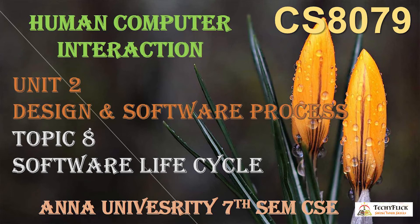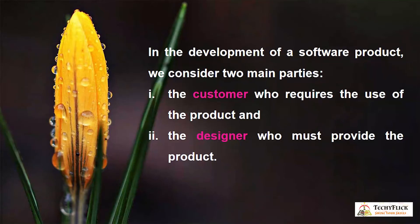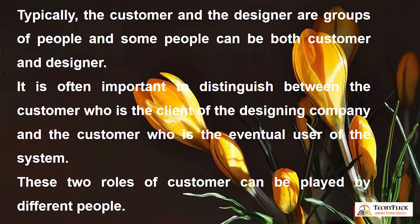Topic 8: Software Life Cycle. In the development of a software product, we consider two main parties. One is the customer, and another one is the designer. The customer requires use of the product, and the designer must provide the product. Typically, the customer and the designer are groups of people, and some people can be both customer and designer. It is often important to distinguish between the customer who is the client of the designing company and the customer who is the eventual user of the system.